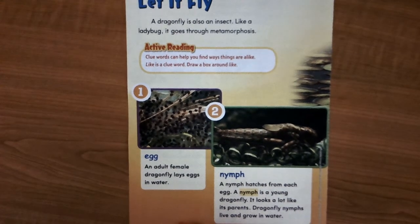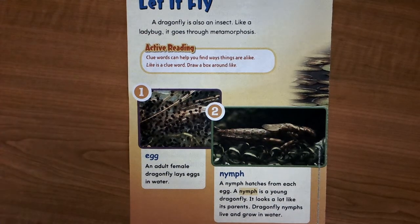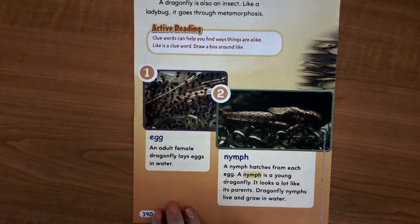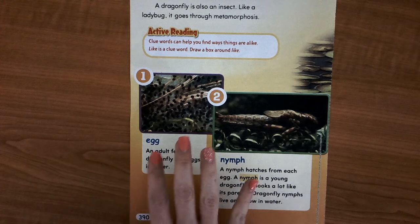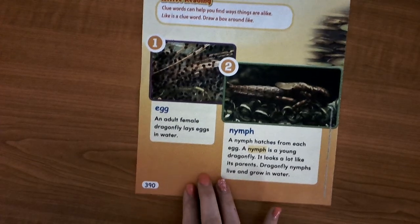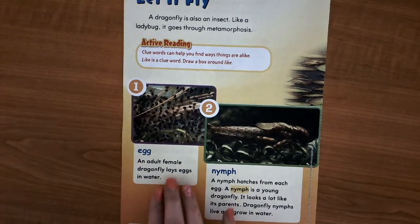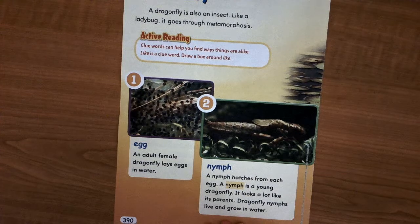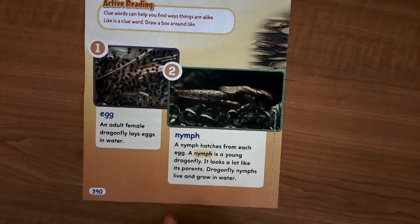Really quick, we're going to go over some vocabulary words, some of which you may have heard with Miss Conrad and some that might be new. The first stage of the life cycle of the dragonfly — that's also in your science textbook on page 390 — is the egg. An adult female dragonfly lays eggs in the water.